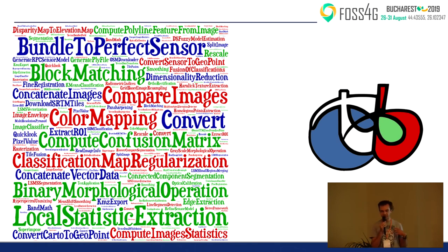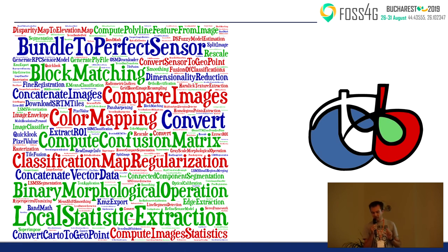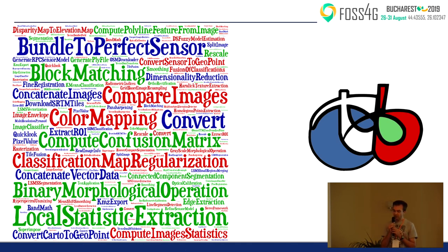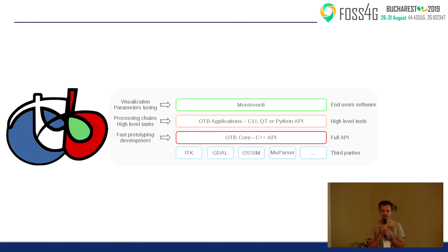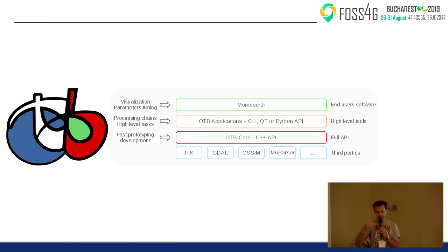Orfeo Toolbox is a library of remote sensing applications. There are about 90 applications in the library, and they go from very low-level pre-processing of satellite images to high-level processing, as some examples have shown you. If we want to have a look at what's inside Orfeo Toolbox, it's a kind of multi-layer sandwich. At the lower layer we have some well-known libraries, then we have our C++ application public interface, and then the layer of Orfeo Toolbox applications.